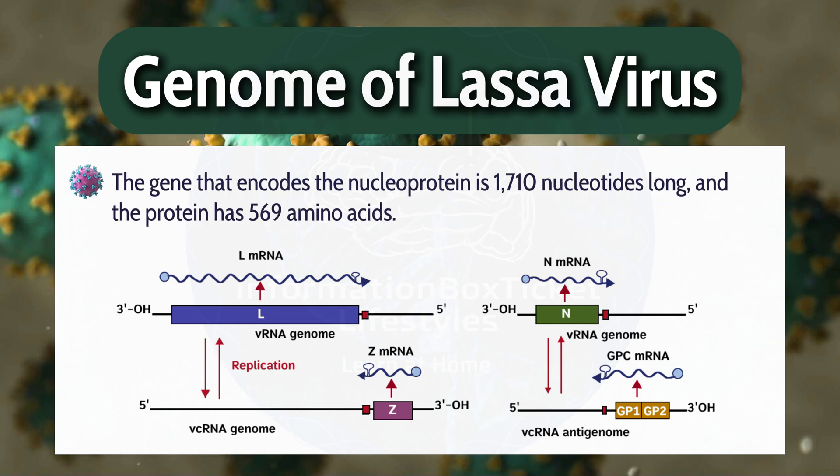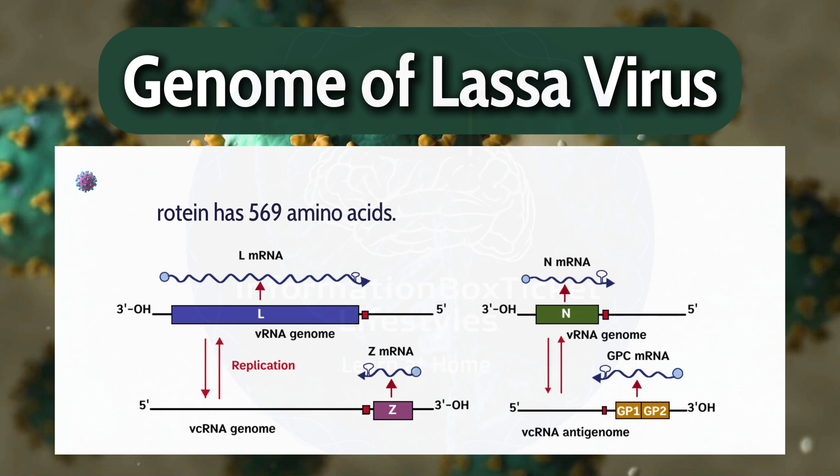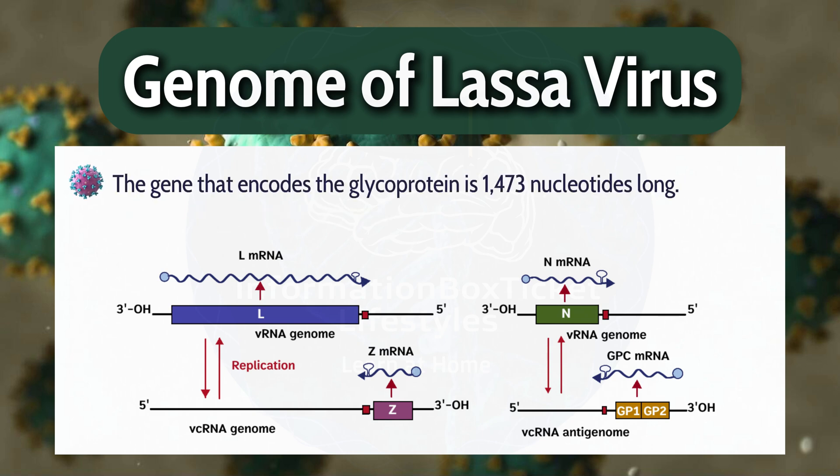The gene that encodes the nucleoprotein is 1,710 nucleotides long, and the protein has 569 amino acids. The gene that encodes the glycoprotein is 1,473 nucleotides long.